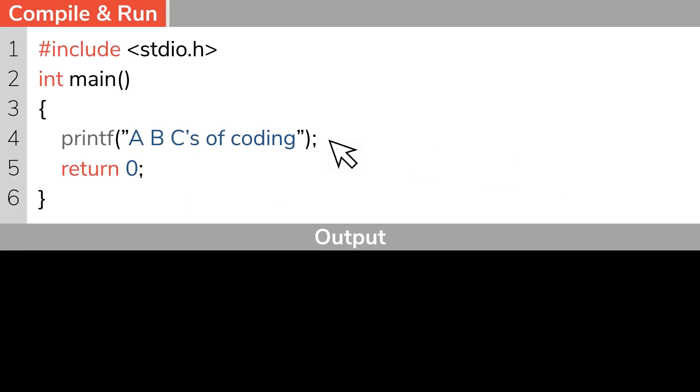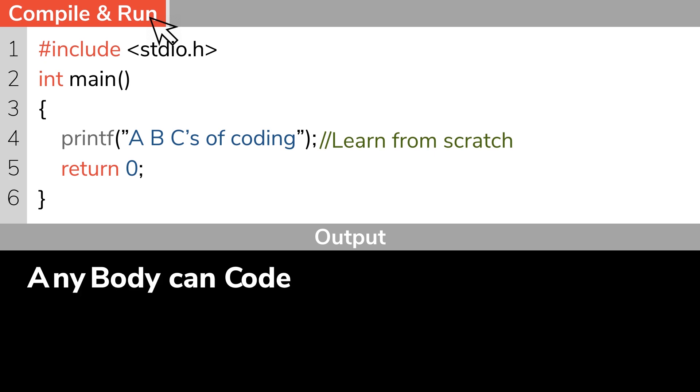Hey guys, I'm Alphonse. Welcome to the 13th episode of Anybody Can Code C Programming Series. If you'd like to take a look at the previous episodes, please use the link in the description. In today's episode, we'll be looking at the different types of function arguments and return values in C programming.